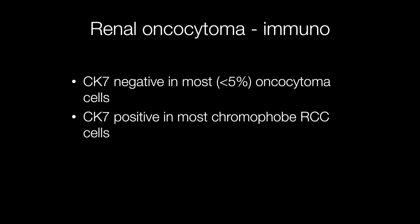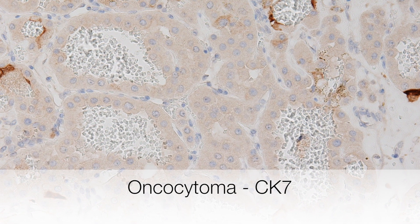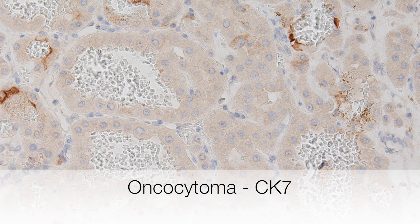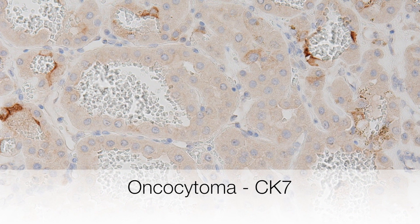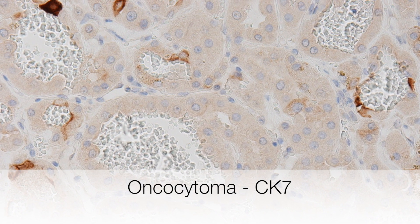In cases where it is difficult on histological grounds to distinguish between a chromophobe RCC and oncocytoma, a useful stain is CK7. The majority of chromophobe RCC cells show positive staining whereas only occasional cells of oncocytomas show positivity. In the typical CK7 staining pattern of an oncocytoma, the vast majority of cells fail to stain with CK7 but there are scattered positive cells here and there.